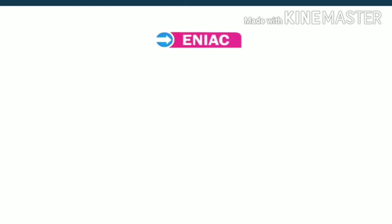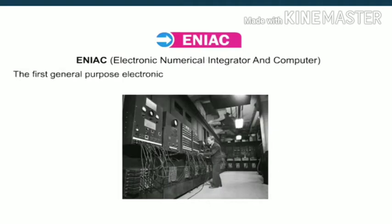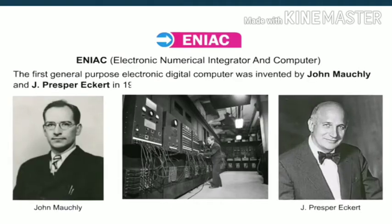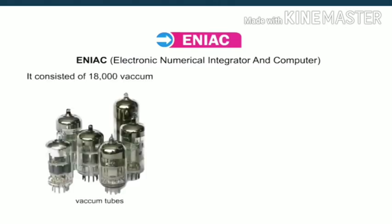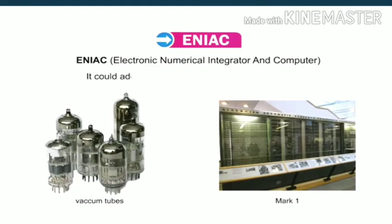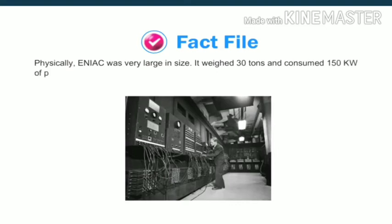ENIAC — Electronic Numerical Integrator and Computer — was the first general-purpose electronic digital computer, invented by John Mauchly and J. Presper Eckert in 1946. It consisted of 18,000 vacuum tubes and was a thousand times faster than the Mark 1. It could add two large numbers in 200 microseconds. Physically, ENIAC was very large — it weighed 30 tons, consumed 150 kilowatts of power, was 100 feet long and 10 feet tall.